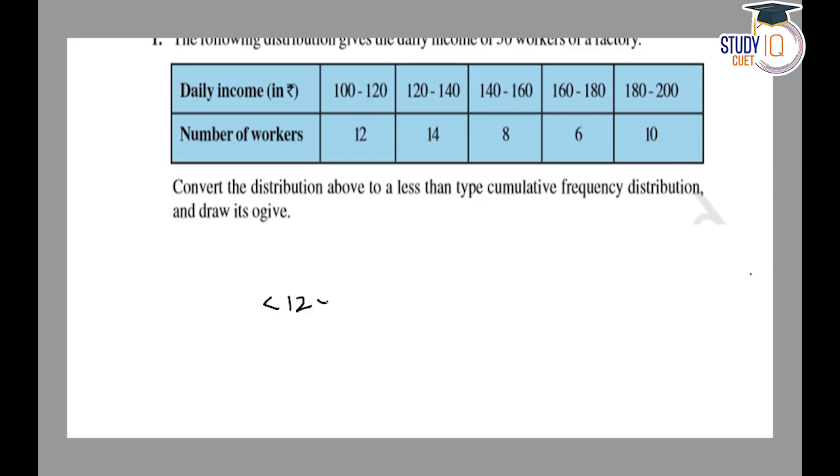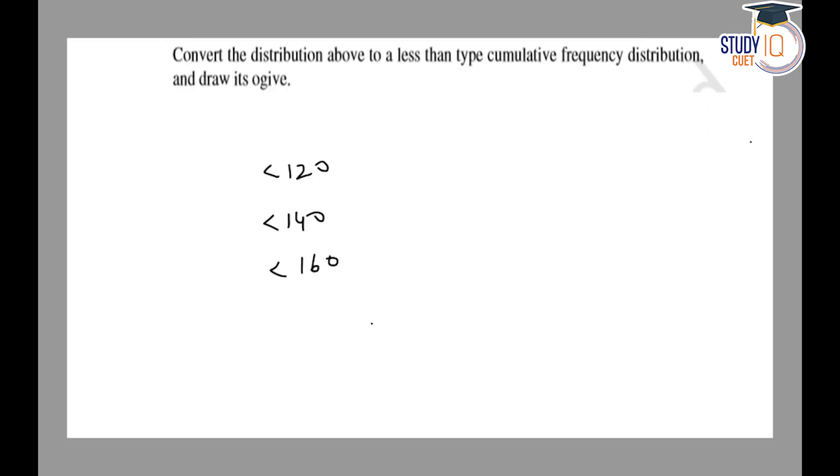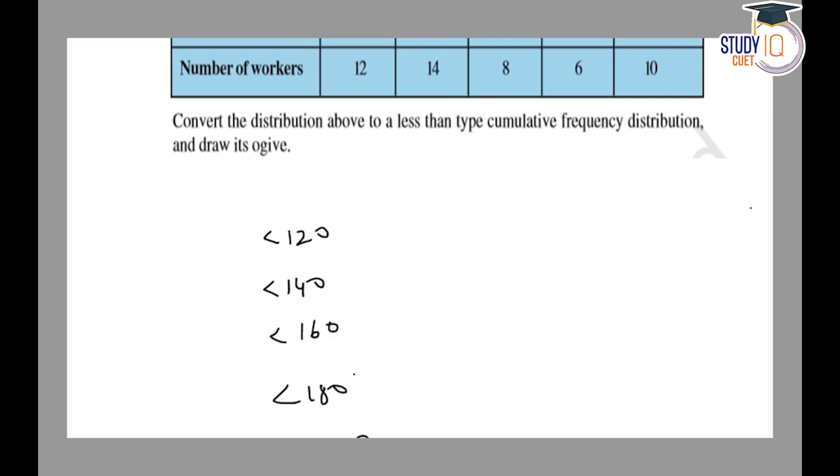Less than 120, less than 140, less than 160, less than 180, less than 200. Corresponding frequencies are given in the question: 12, 14, 8, 6, and 10. The cumulative frequencies will be 12, 26, 34, 40...